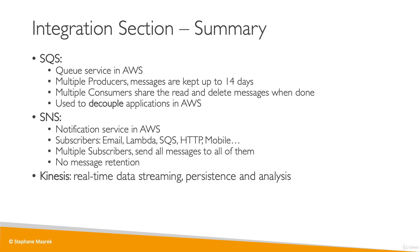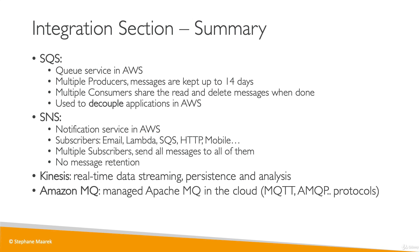Kinesis is a real-time data streaming service which has some data persistence, and you can also run analytics on top of Kinesis in real-time. Amazon MQ is a managed Apache MQ technology in the cloud, and this is for when you want to move from on-premises to the cloud and use the MQTT, AMQP, and other similar types of protocols.